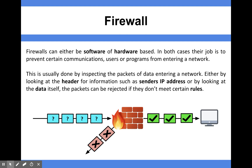It works by inspecting the packets of data that enter a network. If you're not sure what a packet of data is, have a look at our packet switching videos which explain that concept. It looks at things like the header information, the sender's IP address, and even the data itself to see whether it meets certain rules and whether the packet should be rejected.